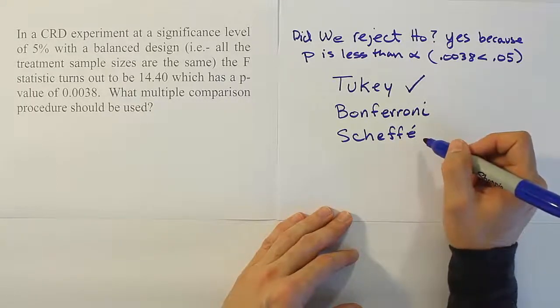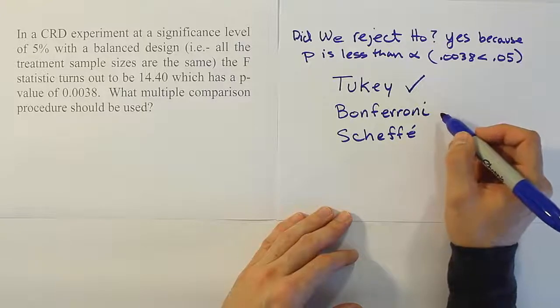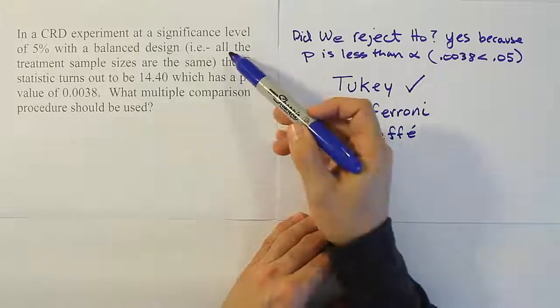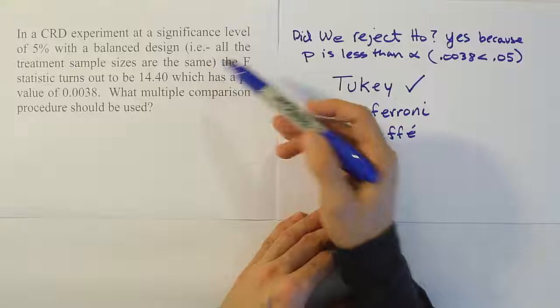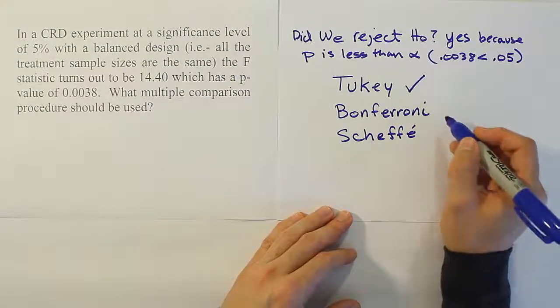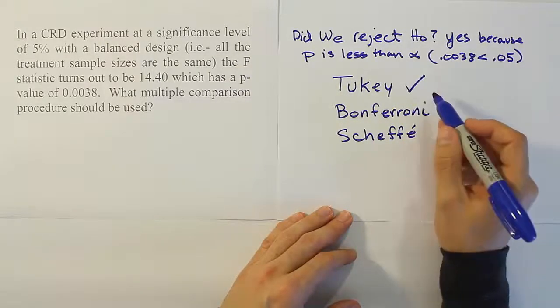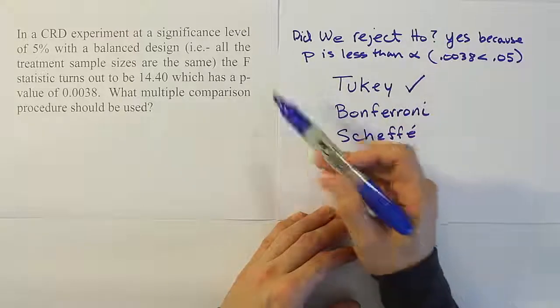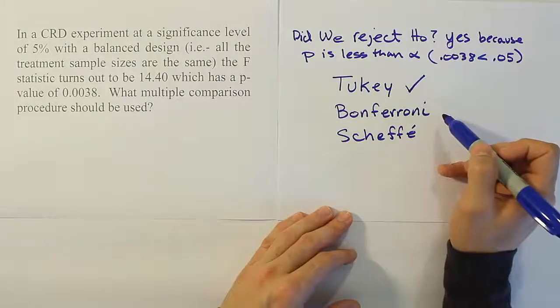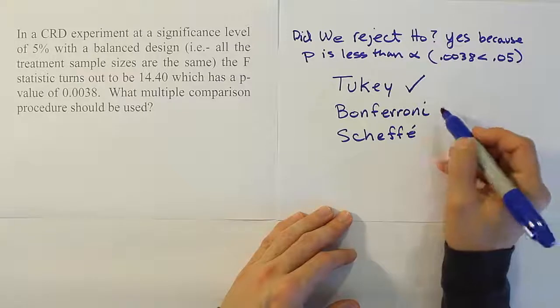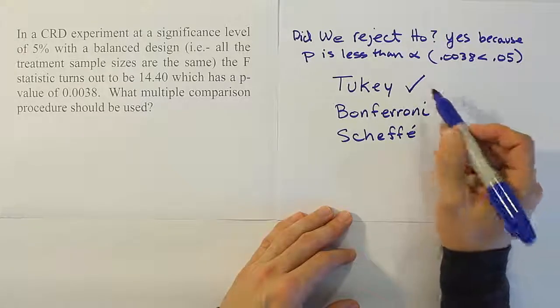The reason why you would choose Scheffé, and by the way, Bonferroni can be used for designs that are not balanced. So even if all the sample sizes aren't the same, then you can choose Bonferroni. So that's why you would choose Bonferroni sometimes over Tukey because Tukey can only work with the balanced design and Bonferroni can work with the unbalanced designs as well. So we choose Bonferroni in those instances where Tukey is not appropriate.